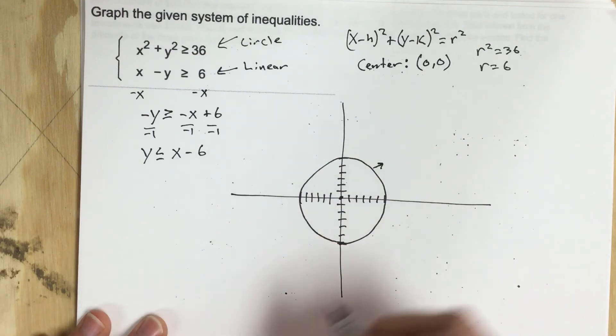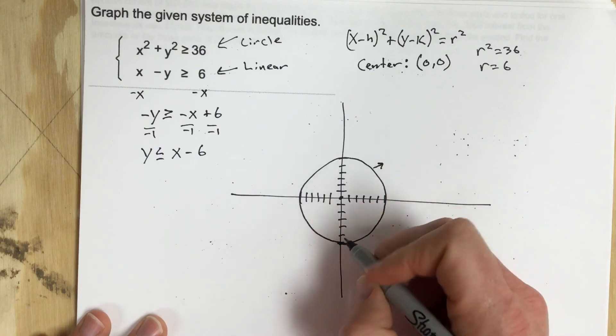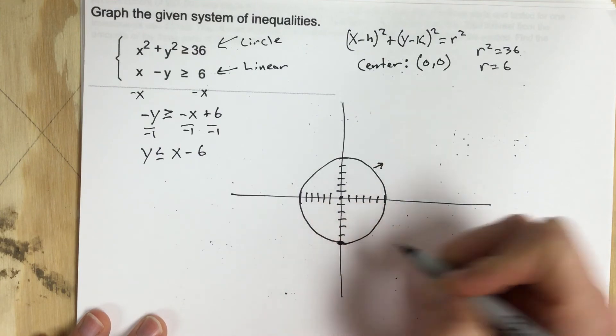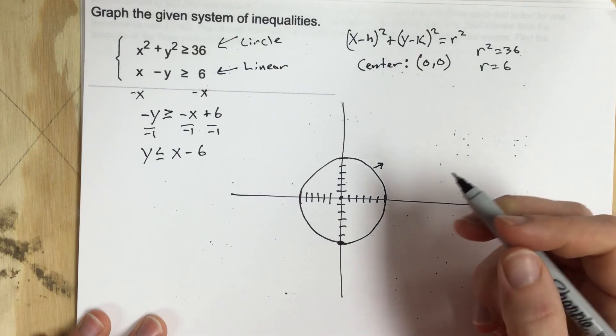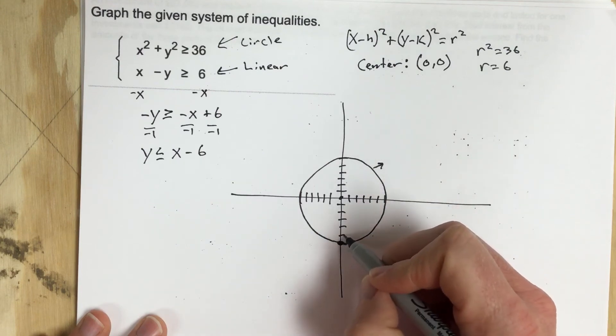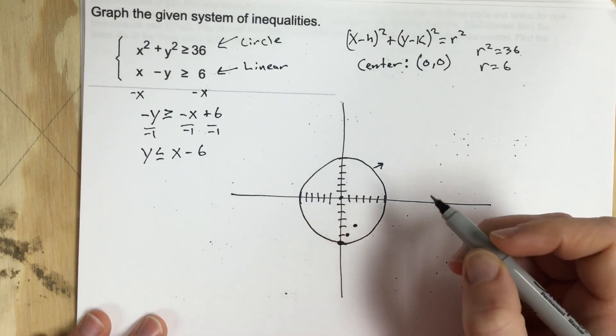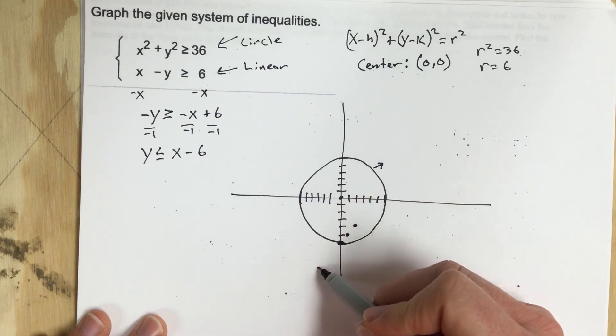Let's go ahead and graph this linear here. We start at negative 6 and we have a slope of up 1 over 1. So we've got a bold line that looks like so.